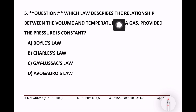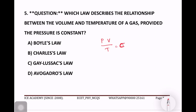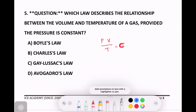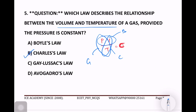Next question: which law describes the relationship between volume and temperature of a gas, provided the pressure is constant? So PV by T is equal to constant. PV is Boyle's Law; V by T is Charles's Law. The question is about volume and temperature, so the right answer is Charles's Law, option B.